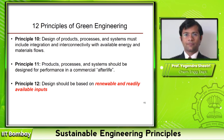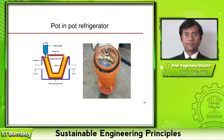Principles 10 through 12 are briefly noted. Principle 10 states that designs must include integration and interconnectivity with available energy and material flows — such as energy and mass integration in chemical engineering. Principle 11 says that products, processes, and systems should be designed for performance in commercial afterlife. Principle 12 states that design should be based on renewable and readily available inputs. The American Chemical Society website has more information and examples on all these green engineering principles.